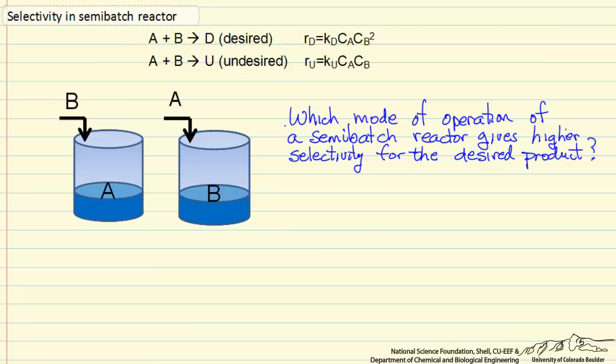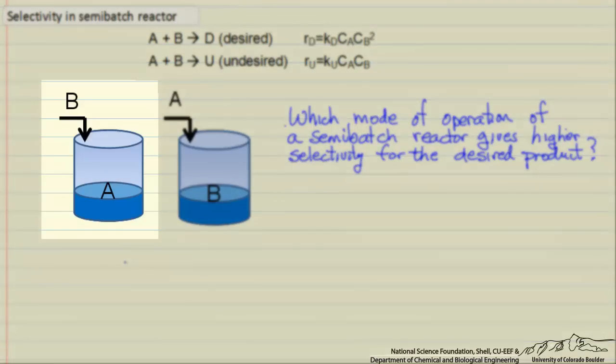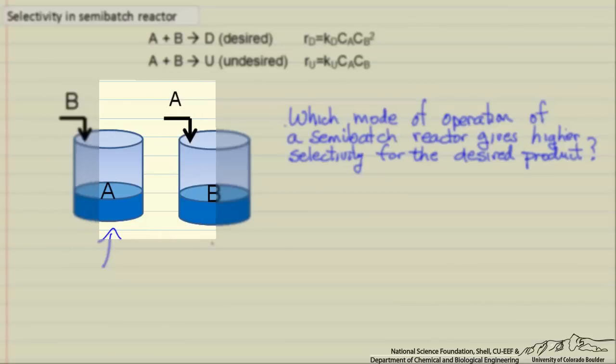And so our possibilities are to fill the reactor with component A initially and then slowly add B to the reactor, or to fill the reactor instead with component B and then slowly add A.